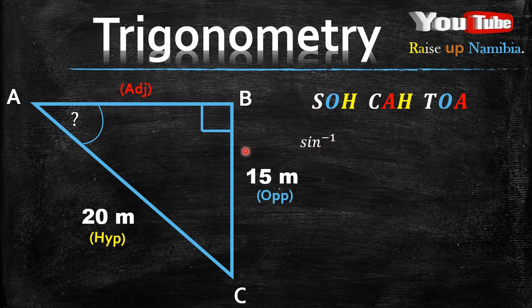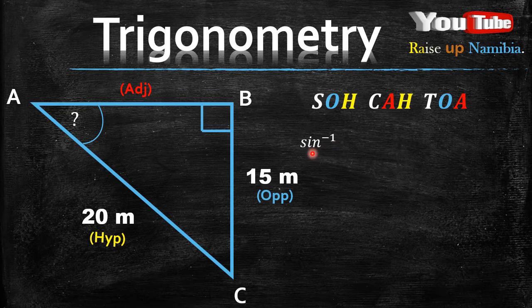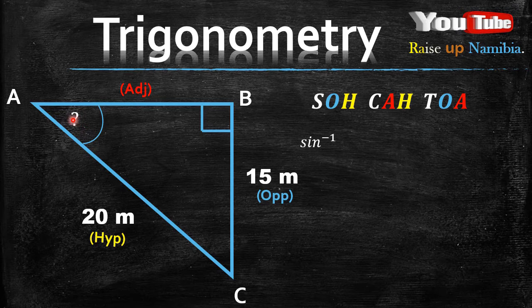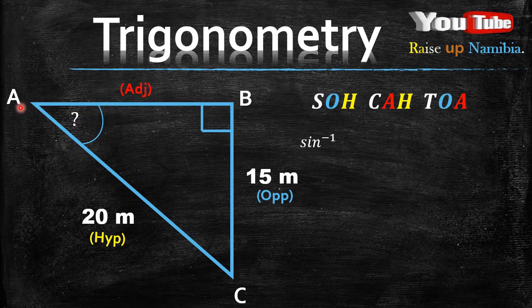So knowing that S stands for sine, we write that sine. But remember, each time you are looking for the angle of a triangle, you always use the inverse of sine and not only sine. Now normally when we write our sine, next to our sine we normally write whatever angle we are given here. Now since we don't have an angle and we are looking for the angle, we just write the angle's name.